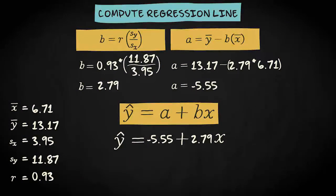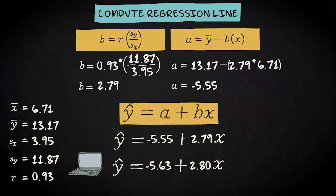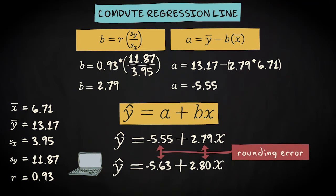The difference with the regression equation found by the computer, which was this one, is due to rounding error. I worked with the rounded means, standard deviations and Pearson's r. This has led to a less precise regression equation. So when working with these formulas, try to round off as little as possible.